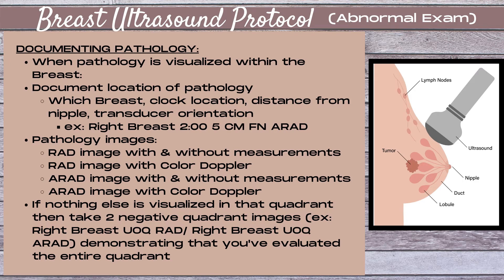For your images, you're going to take a radial image without a measurement, a radial image with two measurements — your length and your height — a radial image with color Doppler, and then move to the antiradial plane: an antiradial image without a measurement, an antiradial image with one measurement which is the width, and an antiradial image with color Doppler.